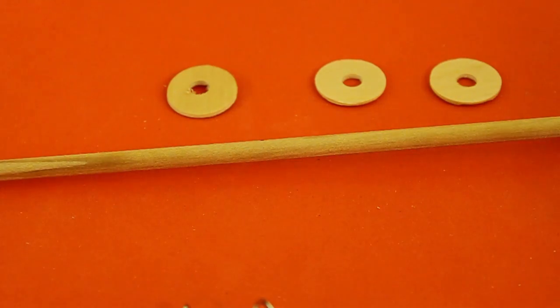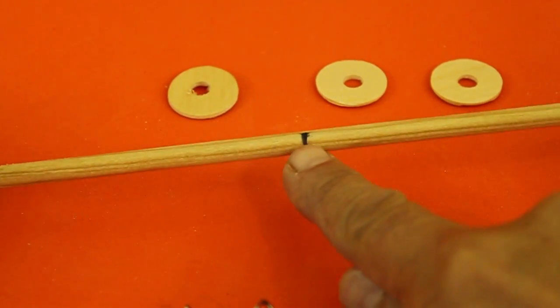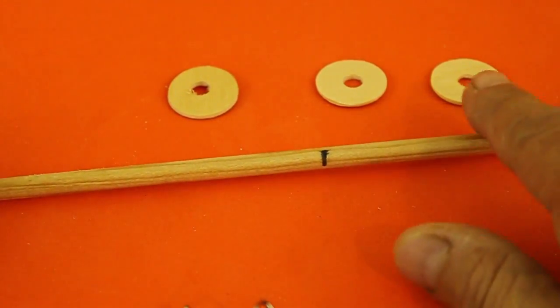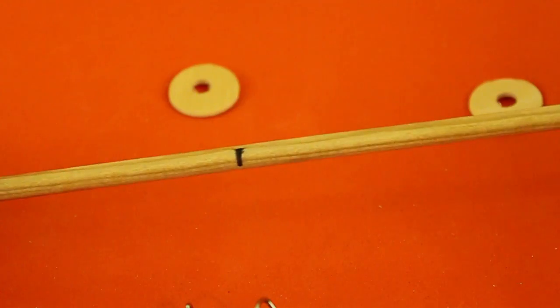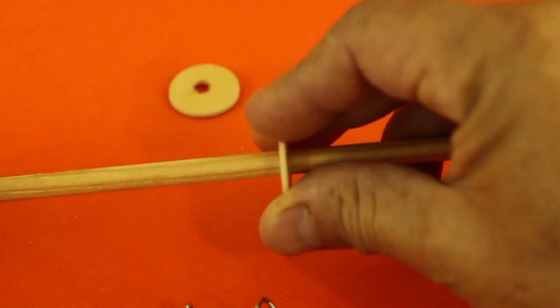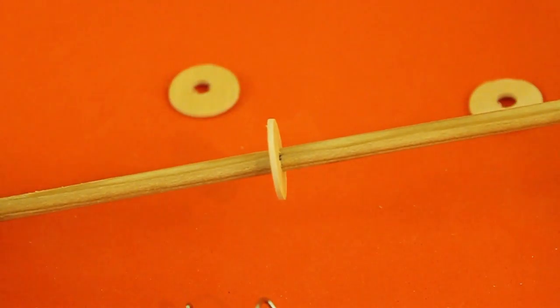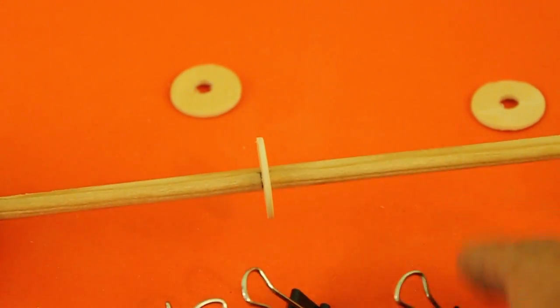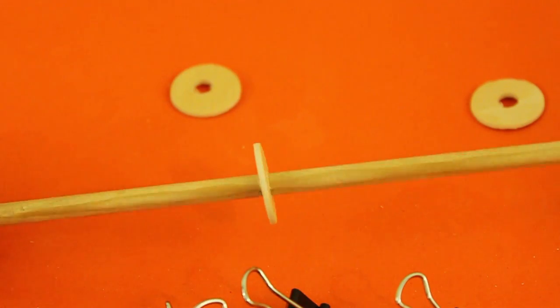The first step is to mark the center of the dowel and insert one of your washers. Now we put a clip at each side of the washer.